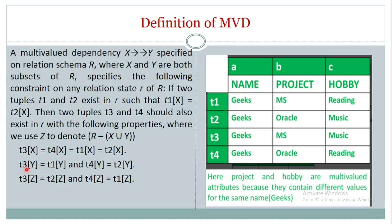Looking at the Y column: t3[Y] = t1[Y] = MS, and t4[Y] = t2[Y] = ORAC. Now the Z column: t3[Z] = t2[Z] = music, and t4[Z] = t1[Z] = reading. This is the formal definition of multi-value dependency.